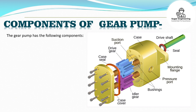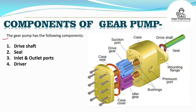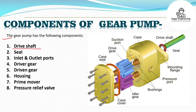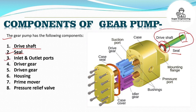Now let's discuss the components of gear pumps. Component 1: the drive shaft. As shown in the diagram, this is the drive shaft and it is connected to a prime mover or motor. Component 2: the seal. The seal is used to avoid leakages in the pump. Component 3: inlet and outlet ports. This is the inlet port, also called the suction port, with pressure P1, and this is the outlet port, also known as the pressure port, with pressure P2.